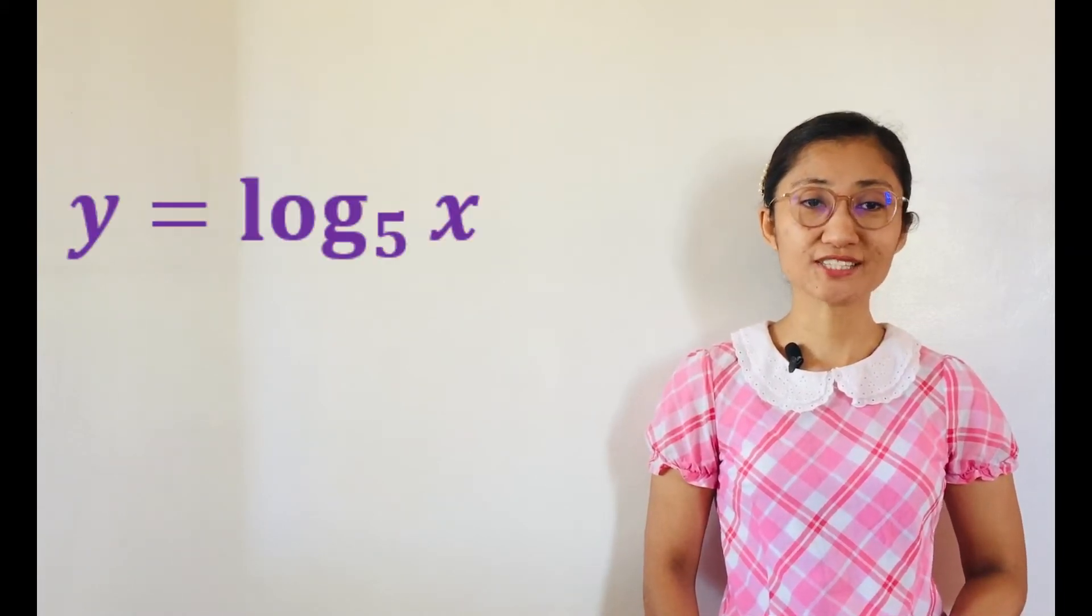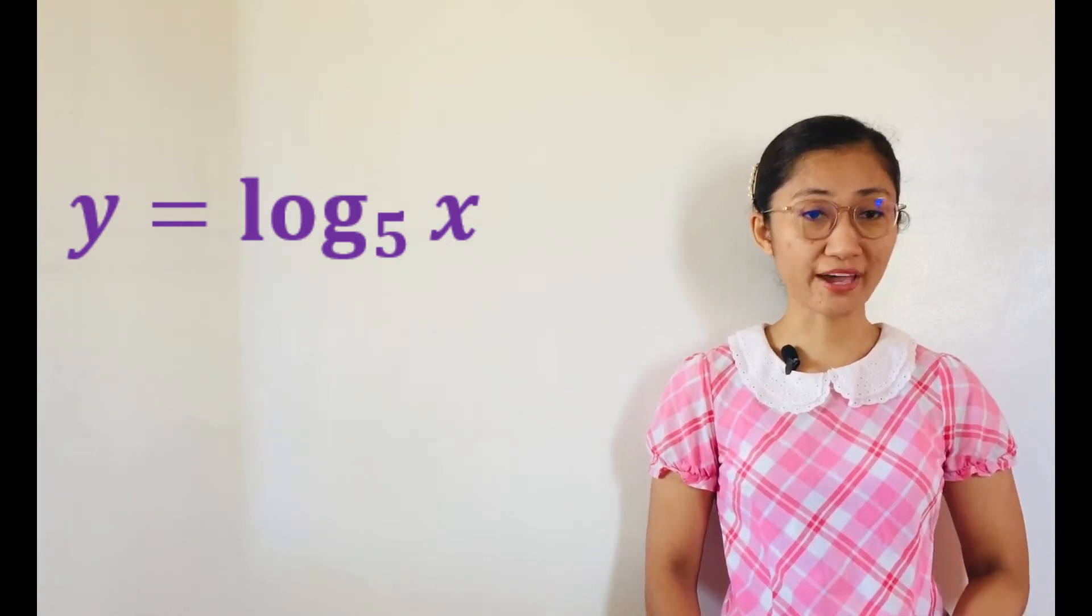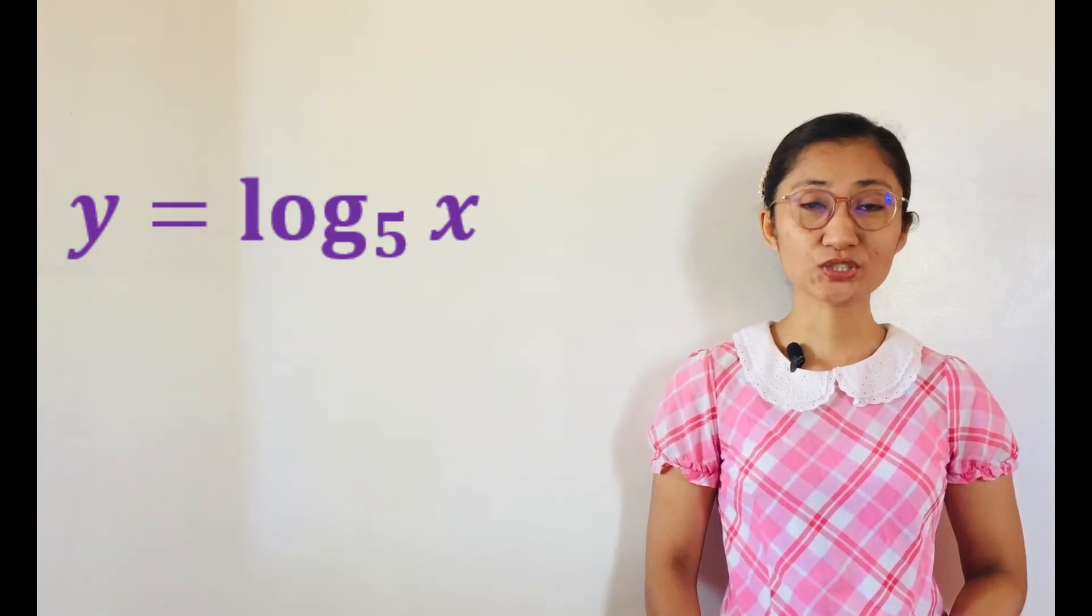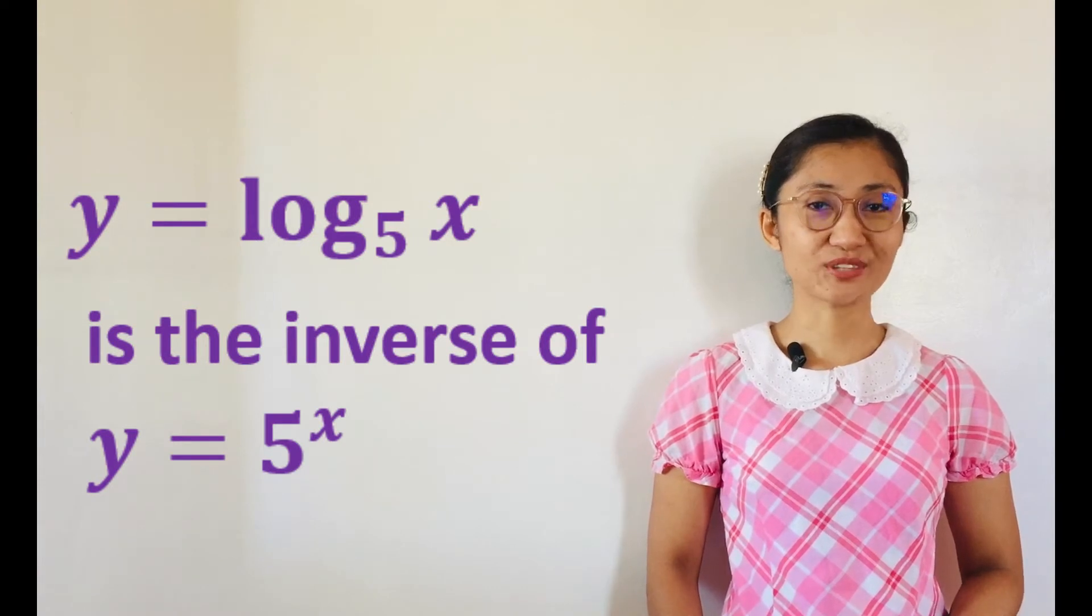we will interchange x and y in the logarithmic equation to express y or f of x in terms of a logarithm. The equation you see is the inverse of y equals 5 to the x.